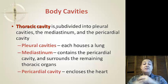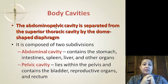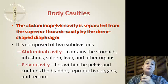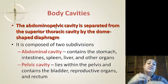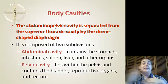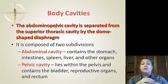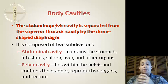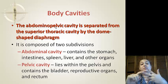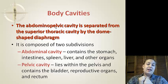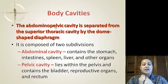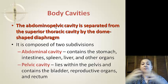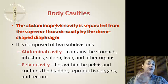The pleural cavity houses the lungs. The abdominal pelvic cavity is separated from the superior thoracic cavity by a dome-shaped diaphragm, and is composed of two subdivisions: the abdominal cavity, which contains the stomach, intestine, spleen, liver, and other organs; and the pelvic cavity, which lies within the pelvis and contains the bladder, reproductive organs, and rectum.